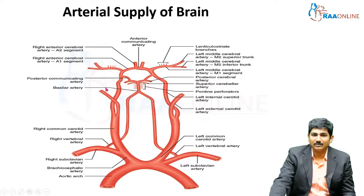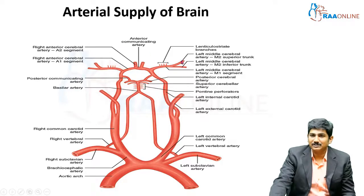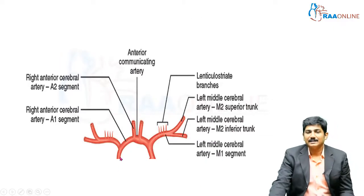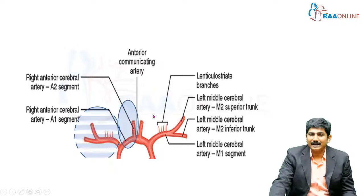Can you see this part of the circulatory system of the brain? When the internal carotid artery enters the skull, it branches into the anterior cerebral artery and the middle cerebral artery. I'll just zoom into this segment of the picture. Once the internal carotid artery enters the skull, the branch called the middle cerebral artery arises here, and this segment is called the anterior cerebral artery.